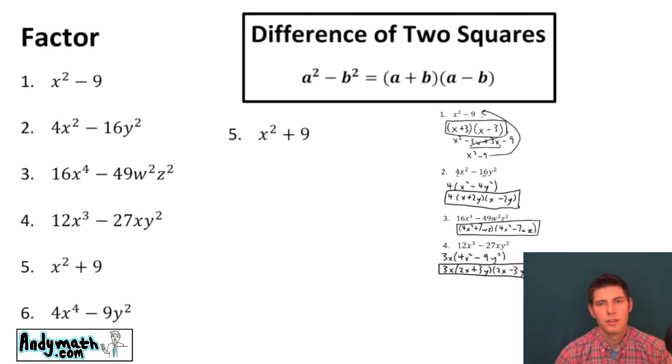Now for number five. So this says x squared plus 9. So notice the x squared and the 9 are perfect squares, but it's a plus sign, not a minus sign. This only works with minus signs. So we are actually done. It doesn't factor. So we'll write out not factorable. So we can't factor this any further. And that's it for that one.